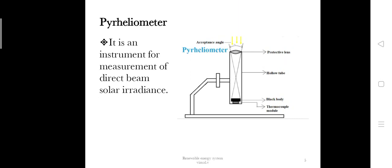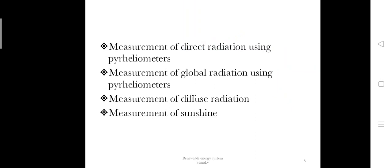These instruments are used for measuring different quantities: measuring direct radiation using pyrheliometers, measuring global radiation using pyranometers, measuring diffuse radiation, and measuring sunshine.